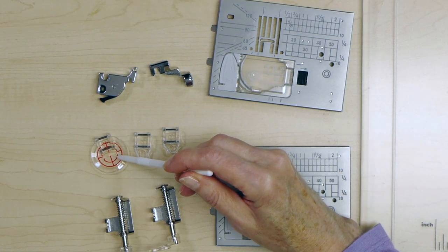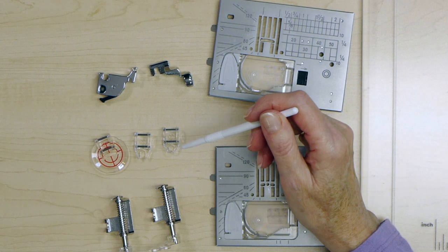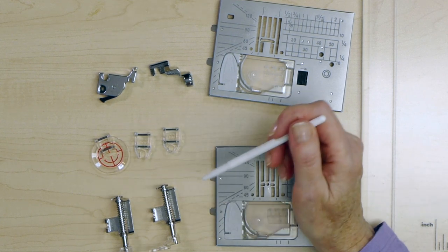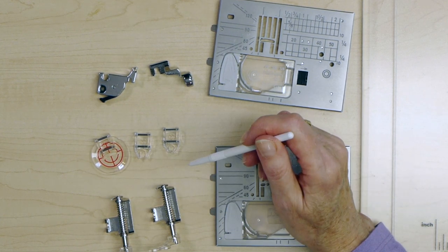There's also lines on it, these registration marks that will help you if you want to do echo quilting. So you can line them up with the previous line of stitching and then stitch that little bit distance away from them.